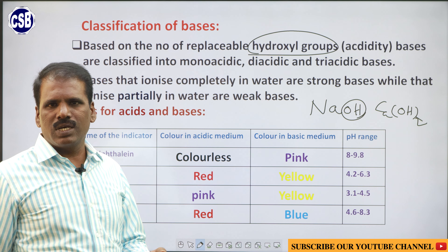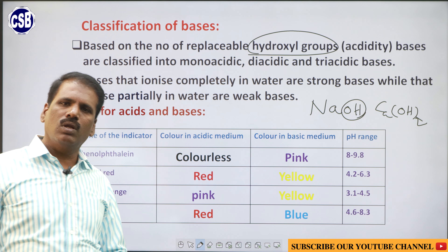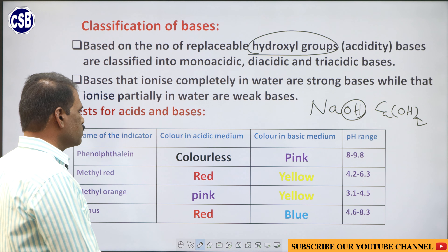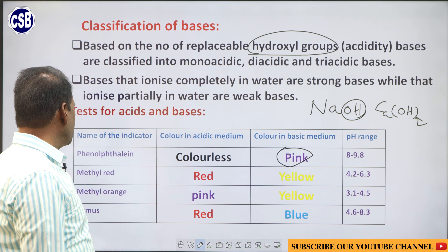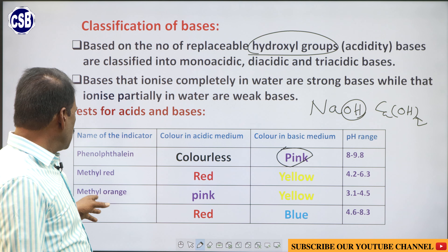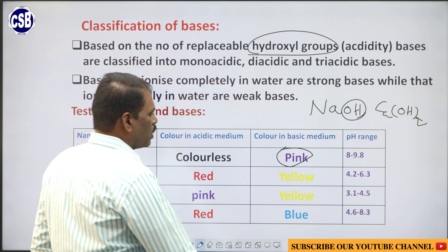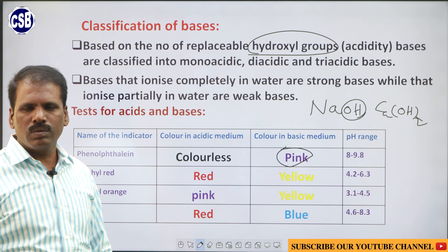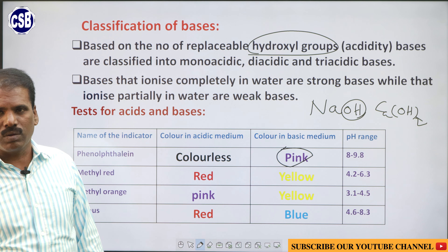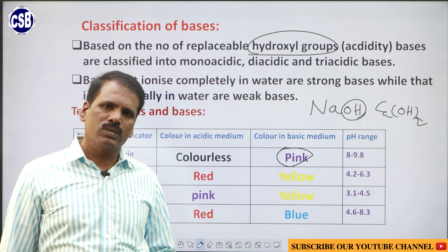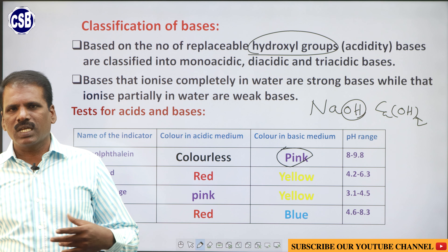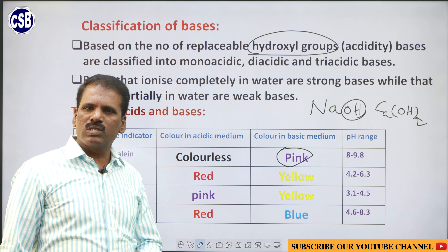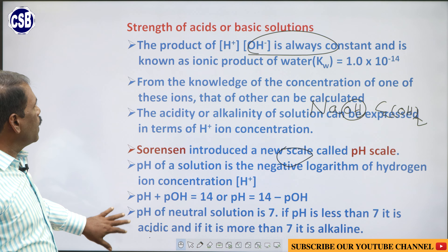Classification of bases: just as acids are classified based on the number of replaceable hydrogen atoms as monobasic and tribasic, bases are classified based on the number of replaceable hydroxyl groups as mono-acidic, di-acidic, and tri-acidic bases. For example, NaOH has only one replaceable hydroxide group, so it is a mono-acidic base. Calcium hydroxide has two replaceable hydroxide groups, so it is a di-acidic base. Bases that ionize completely in water are strong bases, while those that are partially dissociated are known as weak bases.